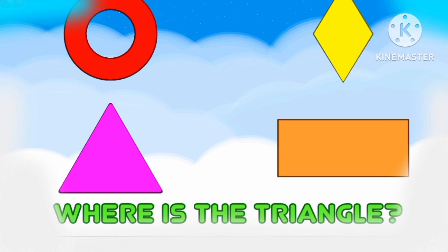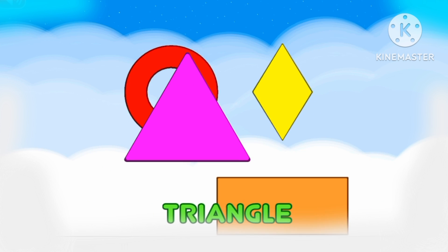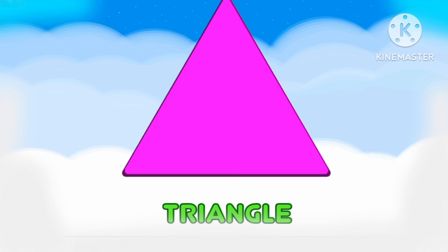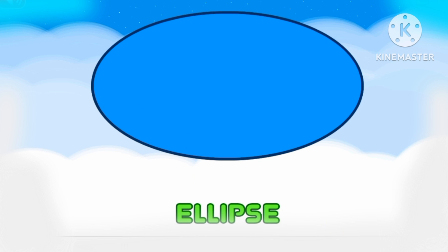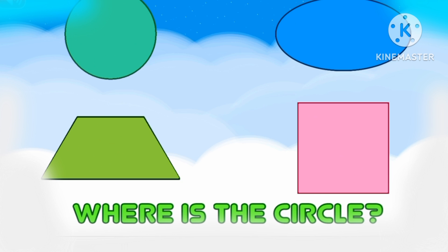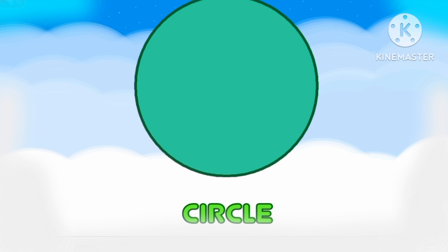Where's the ellipse? Ellipse. Where's the row? Row. Where's the semicircle? Semicircle. Where's the triangle? Triangle. Where's the triangle? Triangle. Where's the ellipse? Ellipse.